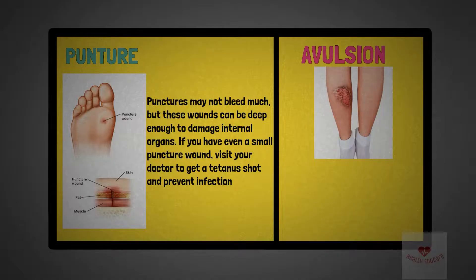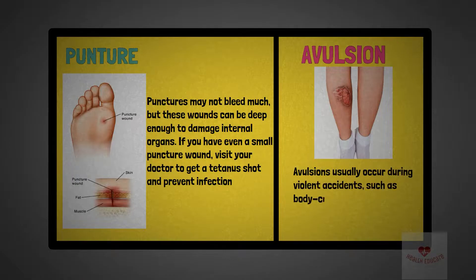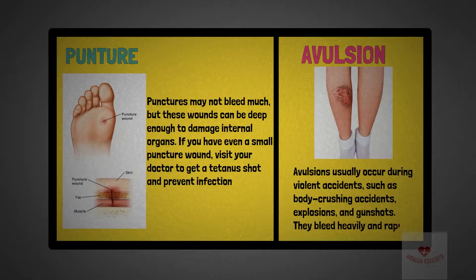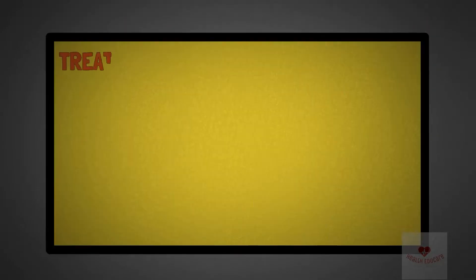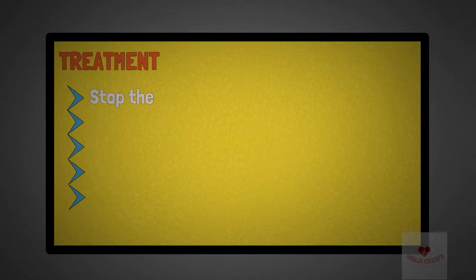Avulsion: an avulsion is a partial or complete tearing away of skin and the tissue beneath. Avulsions usually occur during violent accidents such as body crushing accidents, explosions, and gunshots. They bleed heavily and rapidly.